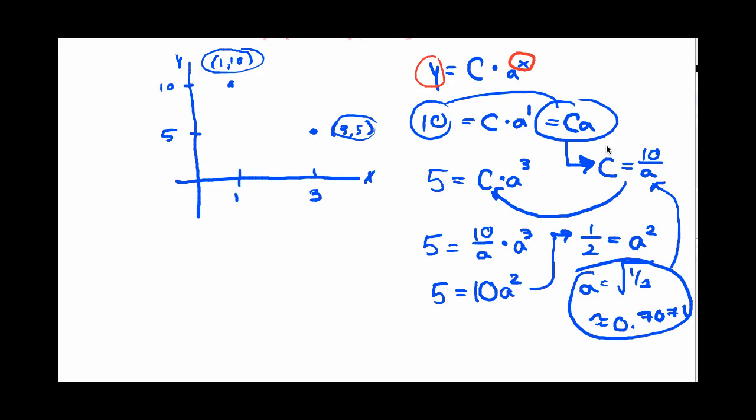Then C is equal to 10 over that. So 10 over 0.7071, and that comes out to be roughly 14.1421.